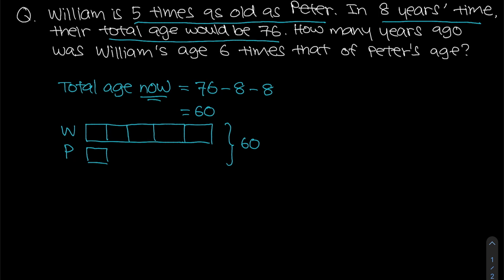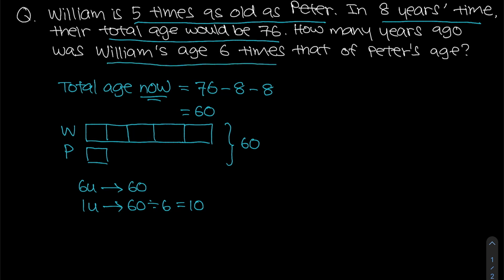We know their total age now is 60, so the model has six equal units in total. Since all units are the same size, six units equals 60. To find one unit, we take 60 divided by 6, which gives us 10.